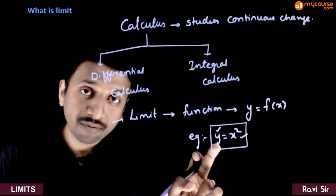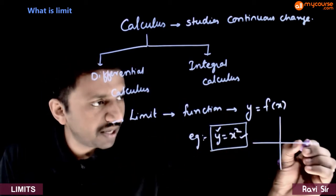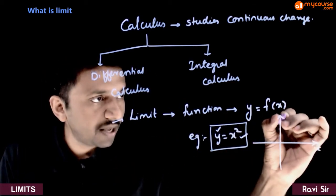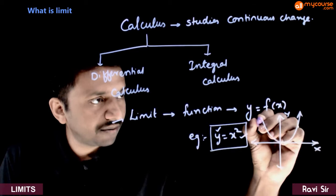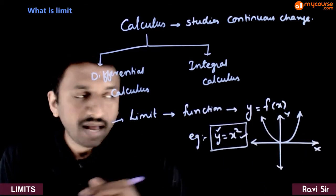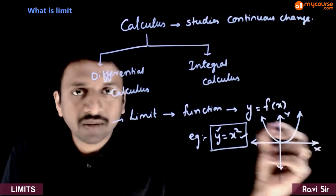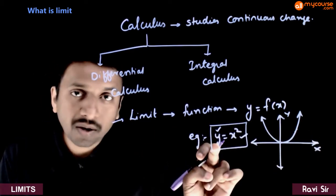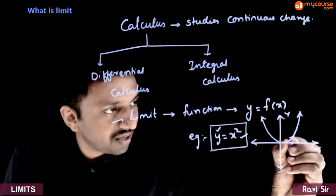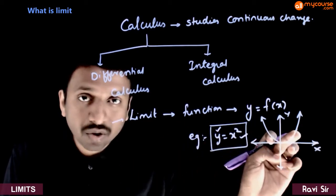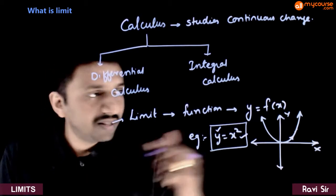If you draw the graph of y is equal to x square on an xy plane, we know that it looks like a parabolic curve. And as you move on this curve, you come across all the points whose y coordinate is the square of the x coordinate. As you move on this curve, both the x coordinate changes and correspondingly the y coordinate also changes.